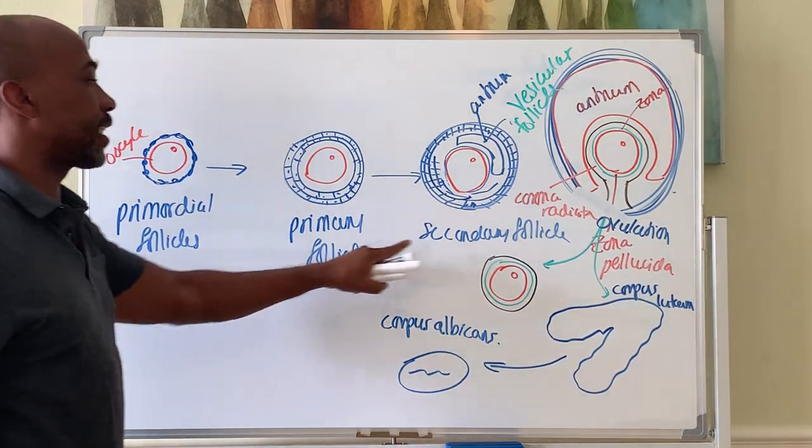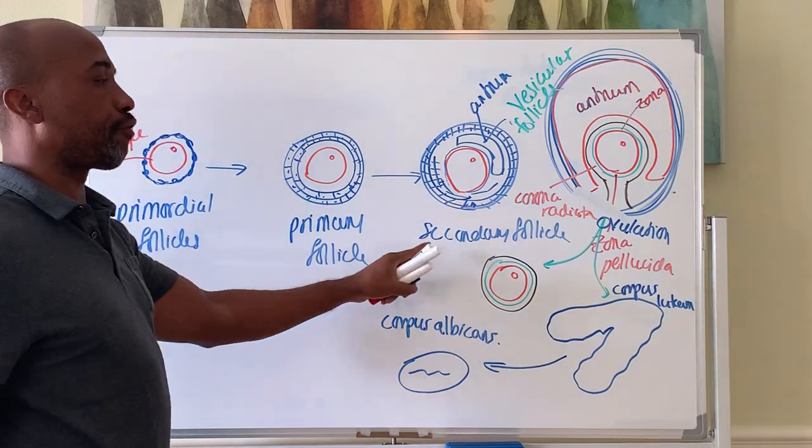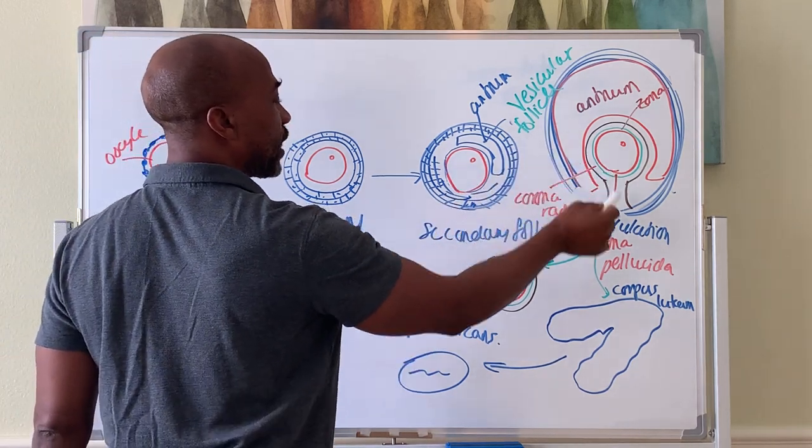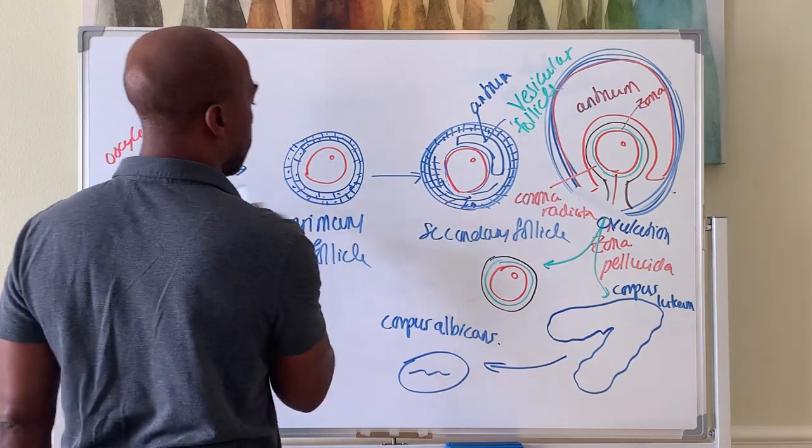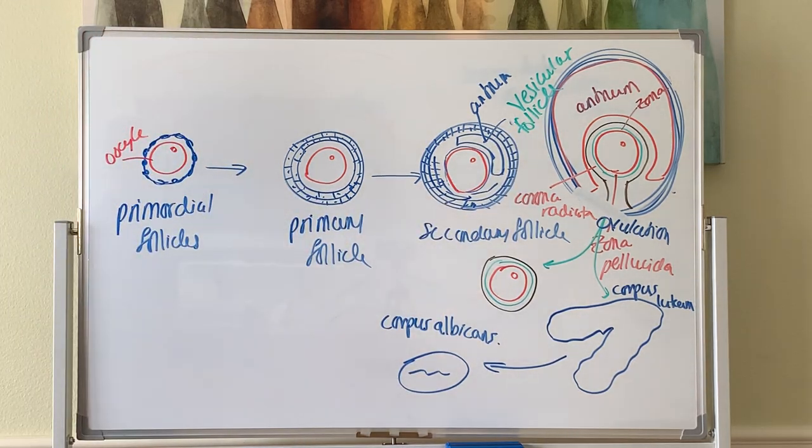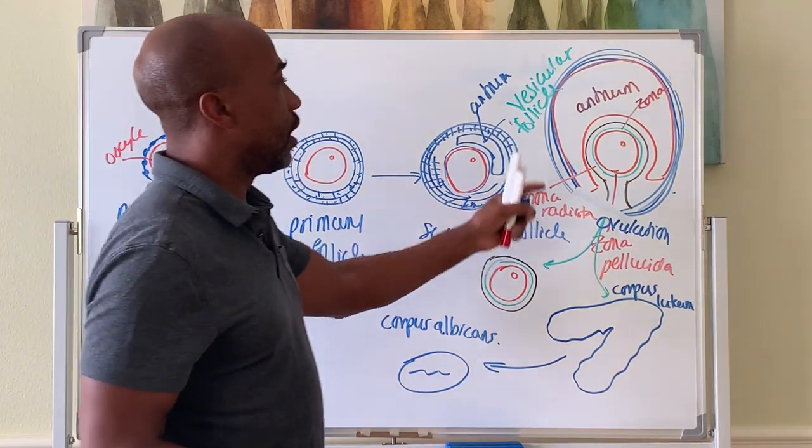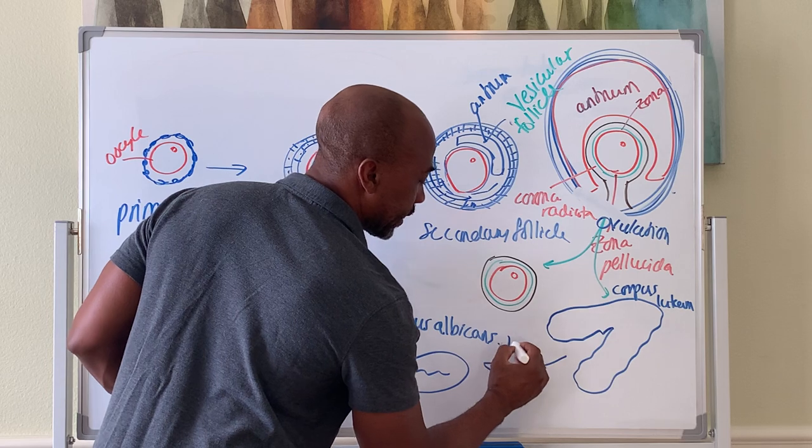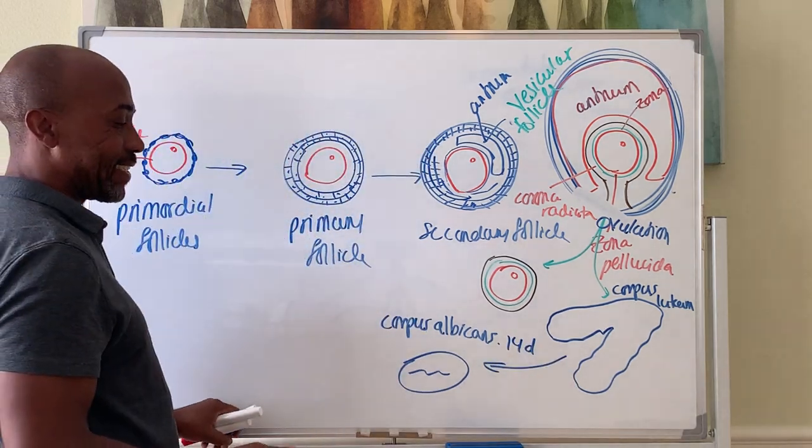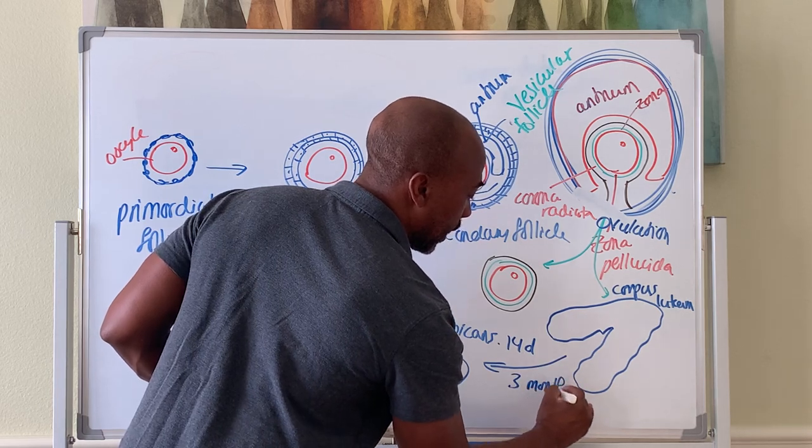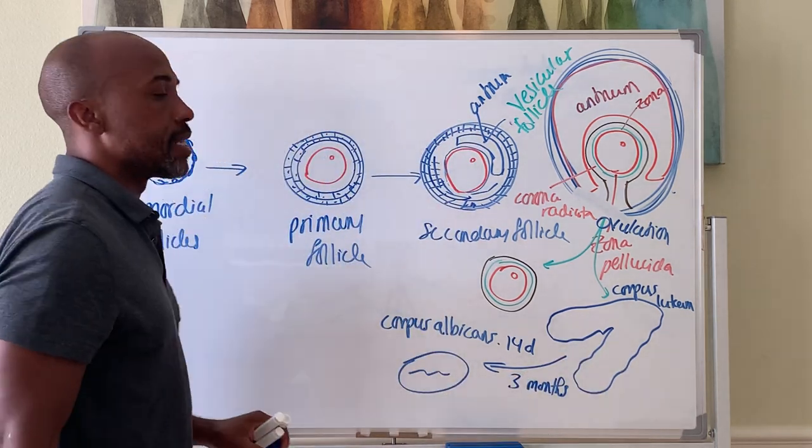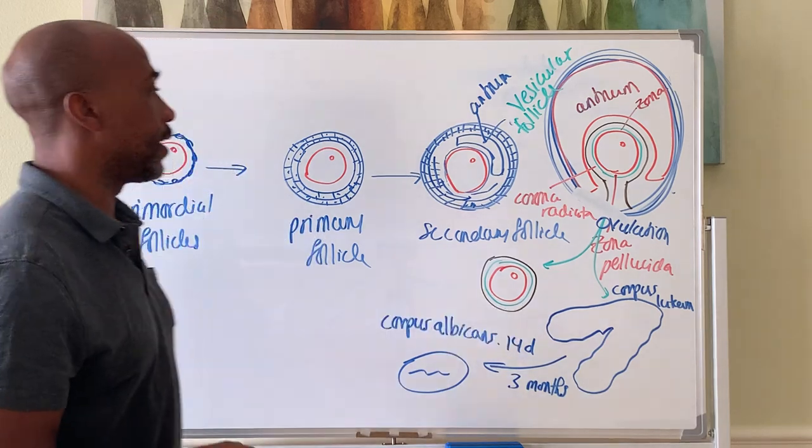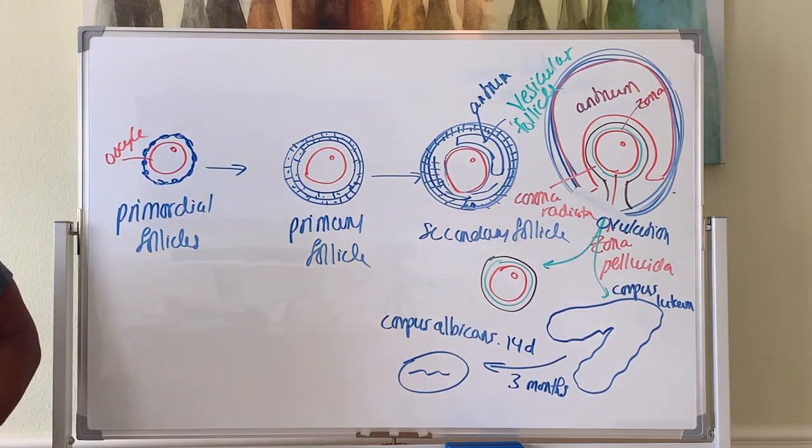Going from here to here takes about one year, just to go from primordial to secondary follicle. This part goes a little faster. Each month, several of these are prompted to try to become the big one that will ovulate. This part is monthly. This part takes about a year to complete. So it's primordial, primary, secondary, vesicular, ovulation, corpus luteum, and corpus albicans. From here to here, it takes about 14 days, unless you're pregnant, then it takes about three months. The corpus luteum is critical because this is what keeps the uterus from shedding. It makes the hormone called progesterone, and that hormone keeps the endometrium alive of the uterus.